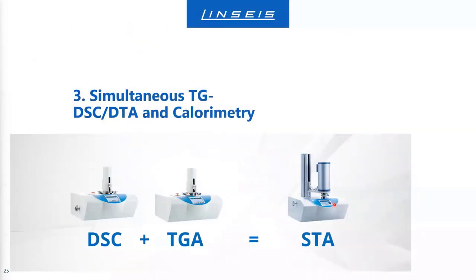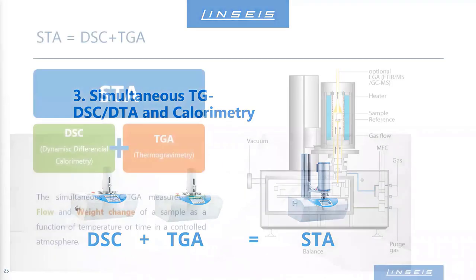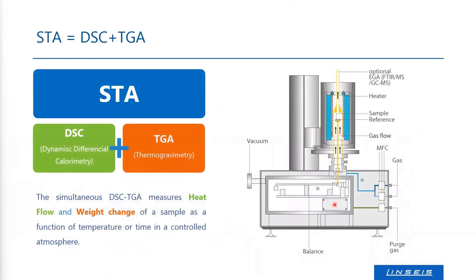The next type of instruments we operate under hydrogen atmospheres are our thermal balances and calorimeters, or the combined instruments called STA, which stands for Simultaneous Thermal Analysis. These combine DSC and thermogravimetry. Both individual instruments and STAs can be run under hydrogen, not only at ambient pressure but also at high pressures.